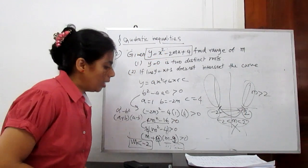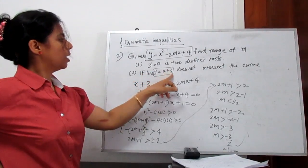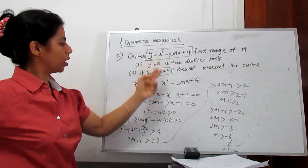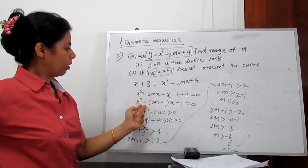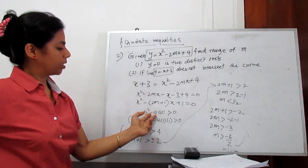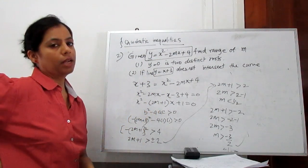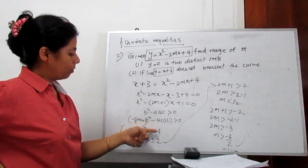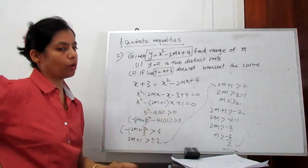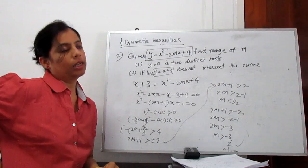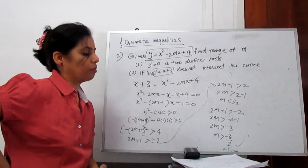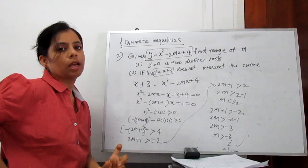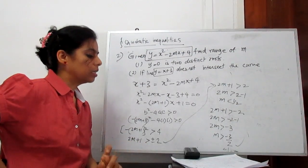Next, we consider if a line does not intersect the curve. For this condition, first substitute the line into the given curve equation and solve it in standard form. Again find the discriminant. If the discriminant is less than 0, it means the line does not intersect the curve. Solve this and find the range of m for which this line does not intersect the curve. Sometimes they give unknown points and you need to find the range where the given condition is satisfied.